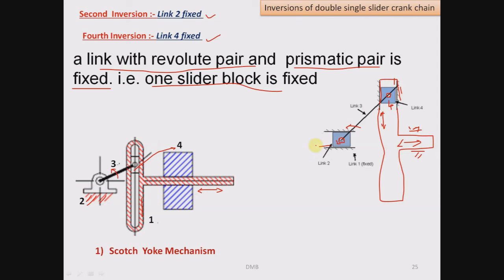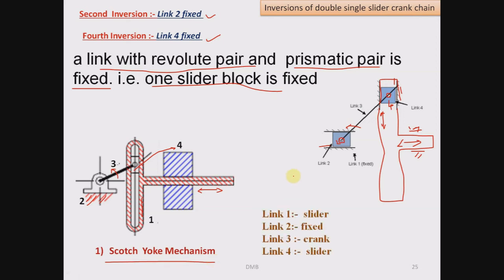We get the same inversion after fixing link number 4. This is used in Scotch yoke mechanism. So link 1 is slider, link 2 is fixed, link 3 is crank and link 4 is slider.